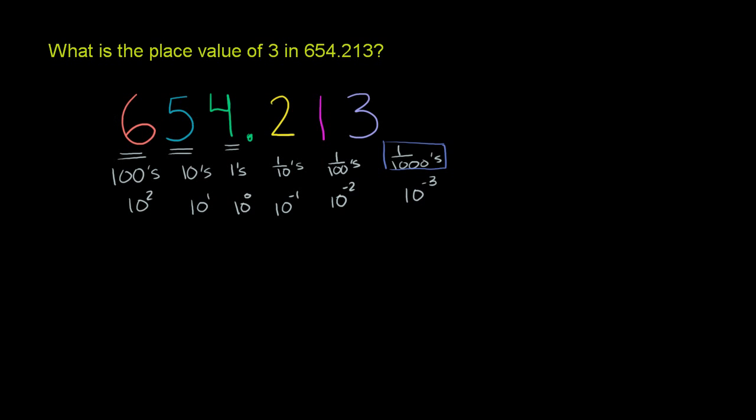We can rewrite this number as 600, right? We have 600 plus 5 tens, or you could say plus 50, plus 4 ones, plus 2 tenths. So plus 2 tenths.